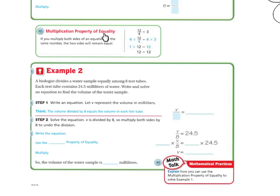The multiplication property of equality states that if you multiply both sides of an equation by the same number, the two sides will remain equal. Example two. A biologist divides a water sample equally among eight test tubes. Each test tube contains 24.5 milliliters of water. Write and solve an equation to find the volume of water sample.